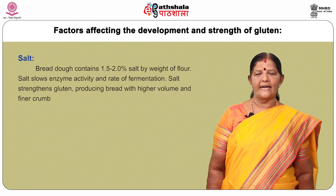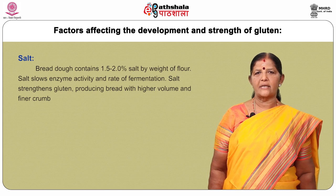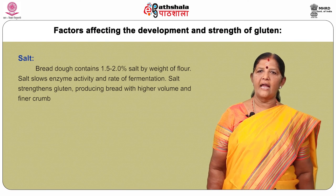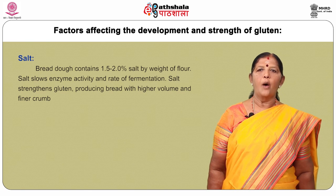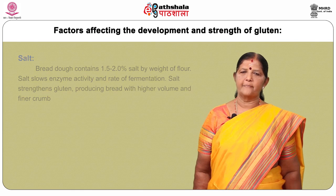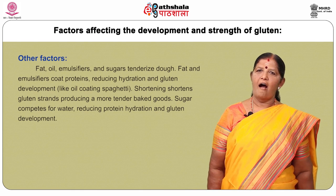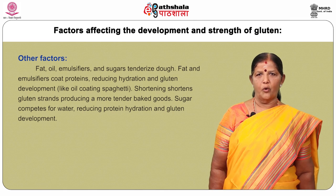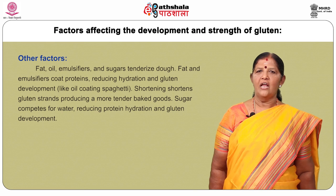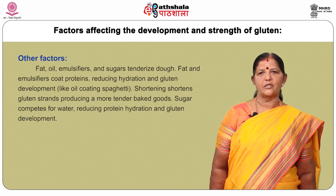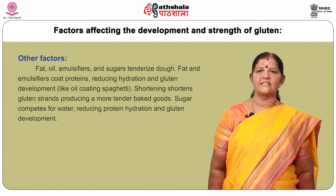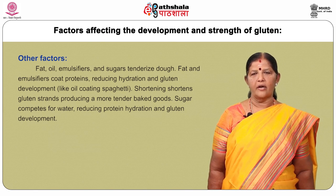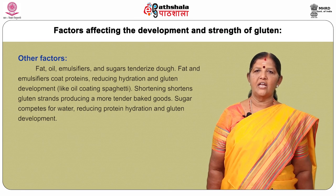Salt: Bread dough contains 1.5–2% salt by weight of flour. Salt slows enzyme activity and rate of fermentation, and strengthens gluten, producing bread with higher volume and finer crumbs. Other factors — fat, oil, emulsifiers and sugars — tenderize dough. Fat and emulsifiers coat protein, reducing hydration and gluten development, like oil coating spaghetti. Shortening shortens gluten strands, producing more tender baked goods. Sugar competes for water, reducing protein hydration and gluten development.